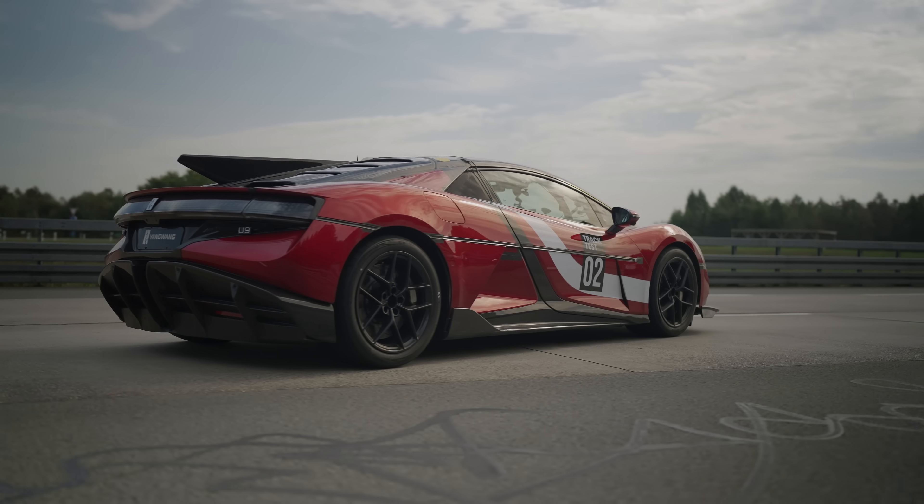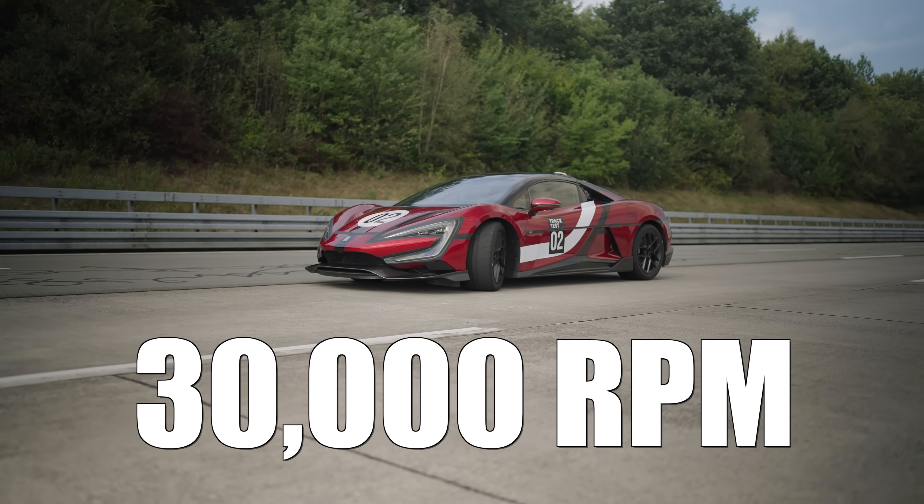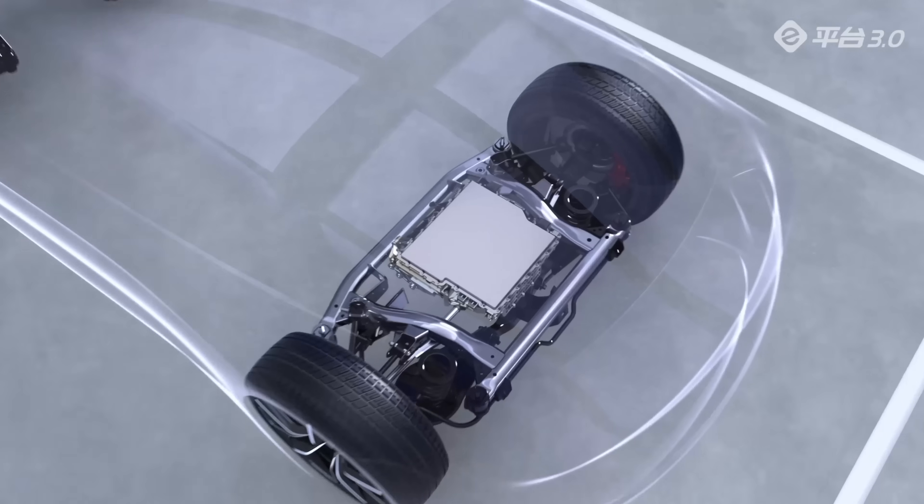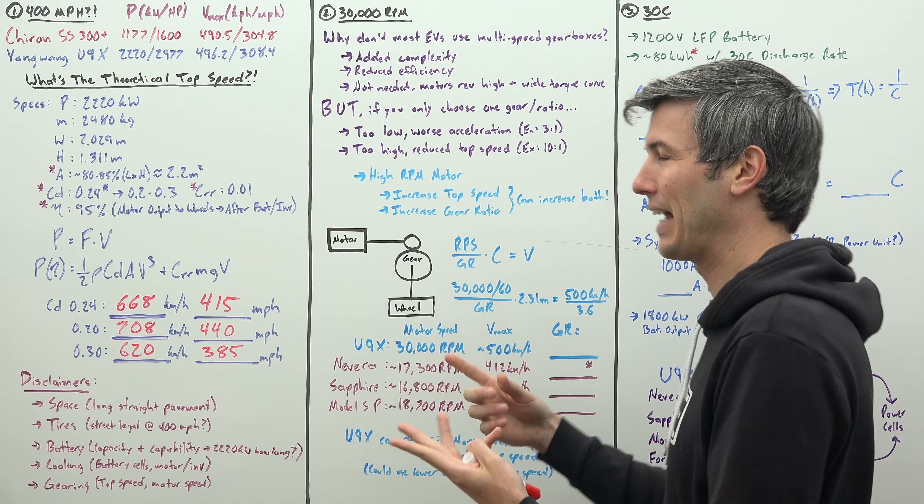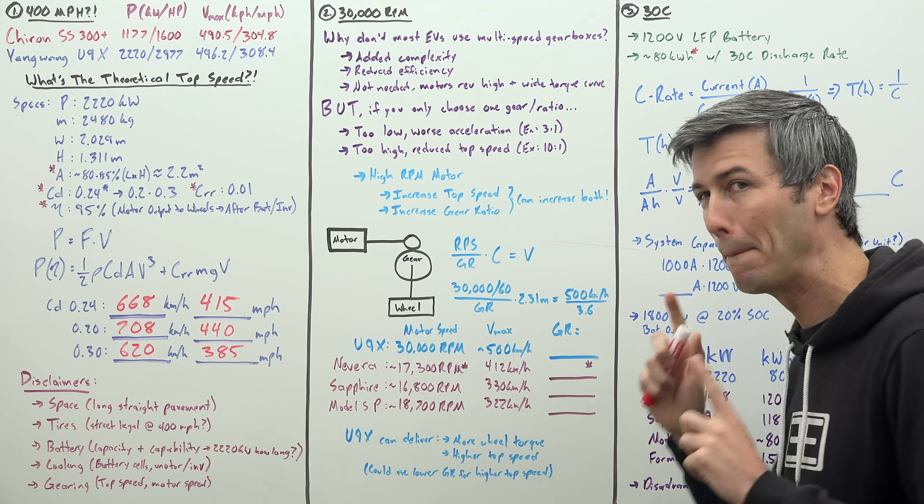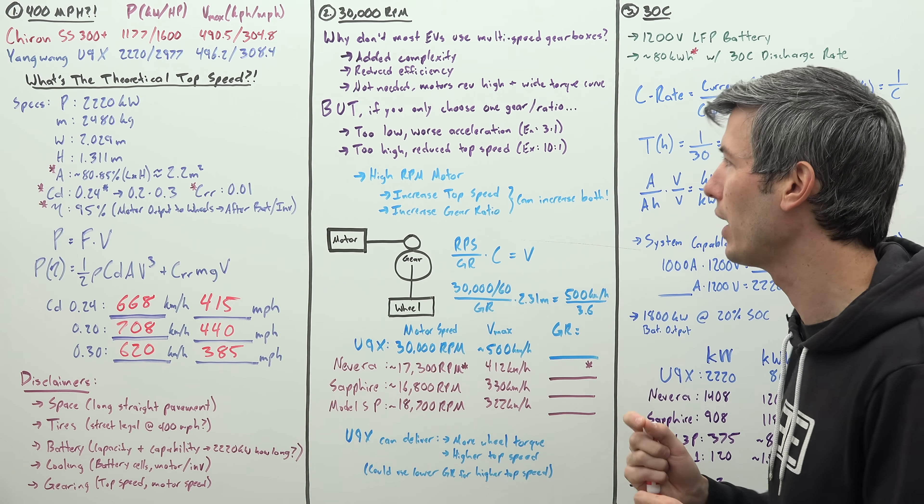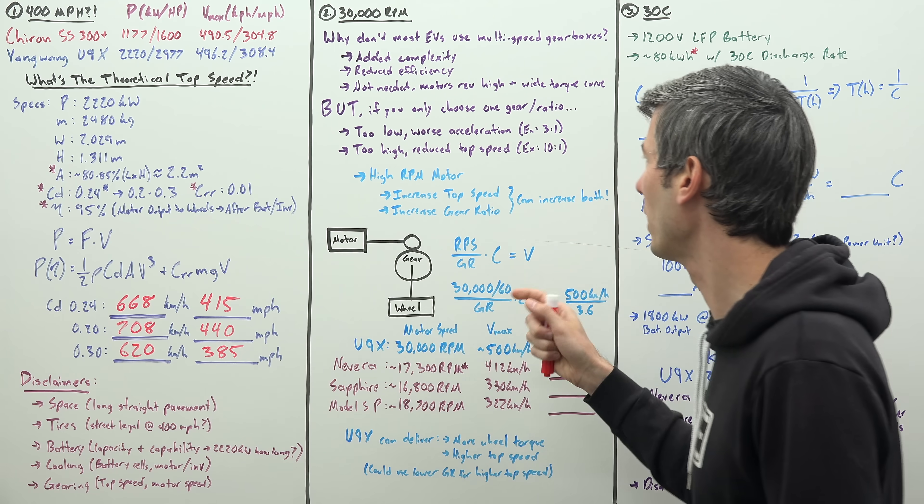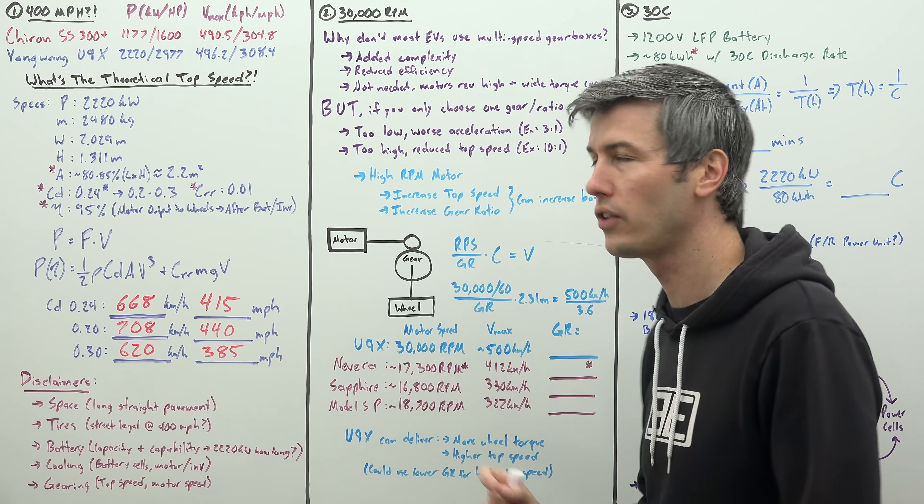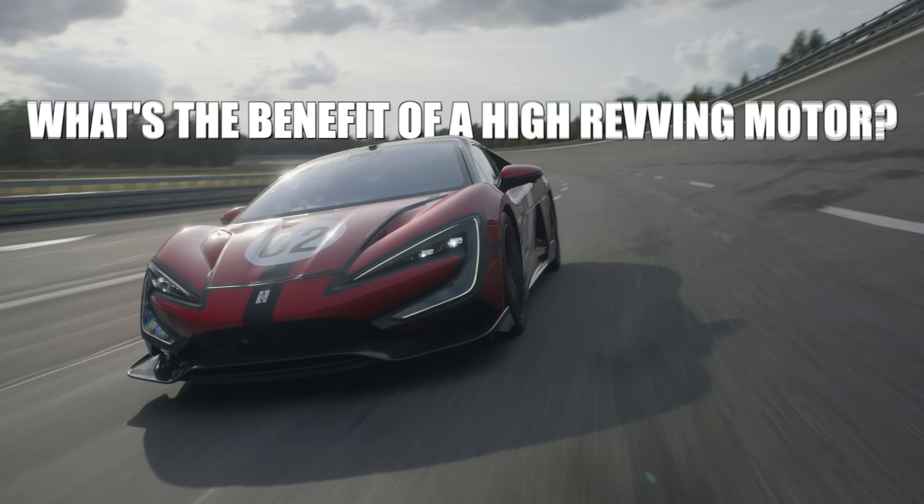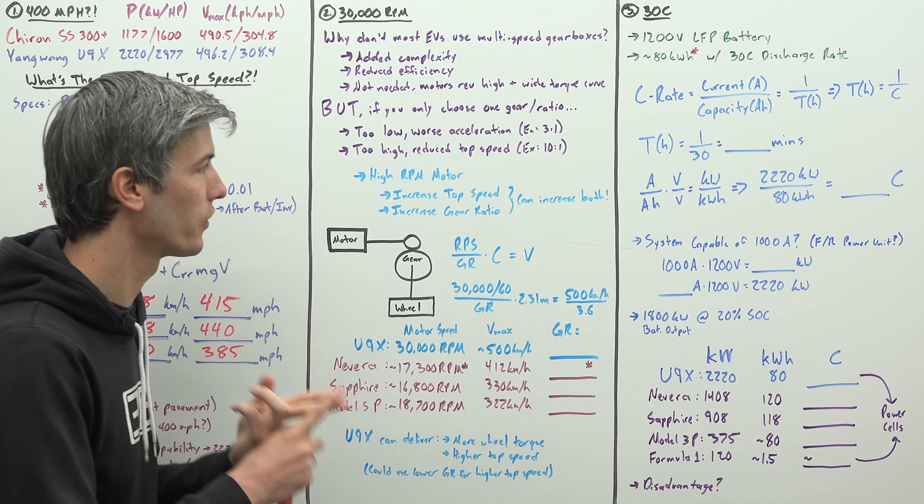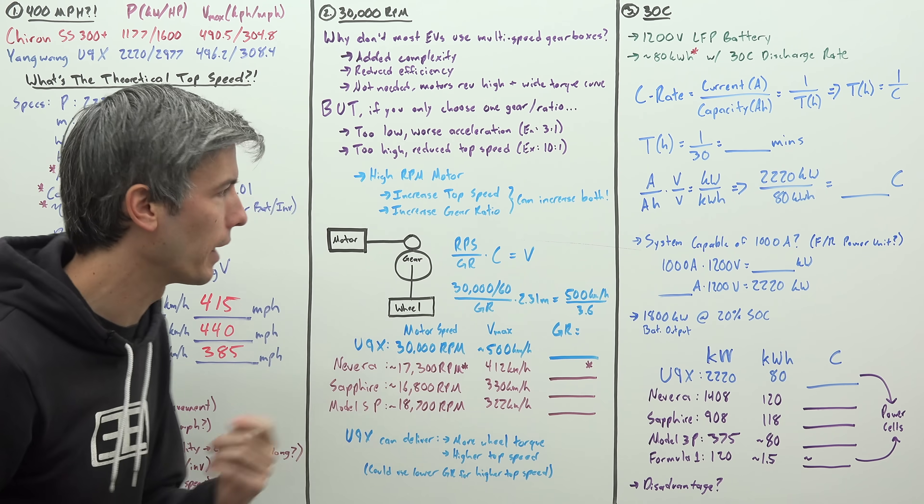So let's move on to the four electric motors, which as mentioned can spin up to 30,000 RPM. So what's the big deal? Well, most electric vehicles don't use multi-speed gearboxes. Why not? Well, there's added complexity, there's reduced efficiency, and it's simply not needed because electric motors rev high and they have a wide torque curve. So you don't need those multi-speed gearboxes. But if you only choose a single gear ratio for that gear reduction, well, if you choose too low of a gear ratio, say 3 to 1, you're gonna have worse acceleration. And if you choose too high of a gear ratio, so you have lots of wheel torque, well, that reduces your top speed. So what's the benefit of a high revving motor? Well, if you increase how fast your motor can rev, you can increase the top speed of the vehicle, and you can increase the gear ratio that you use. So you can reduce this compromise that is made based on gearing.